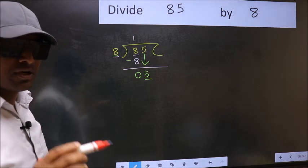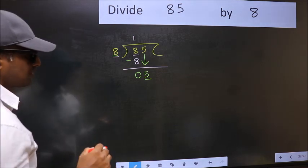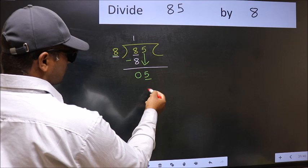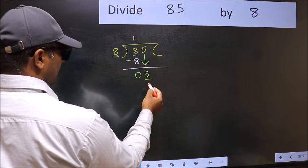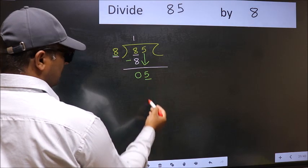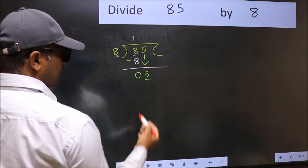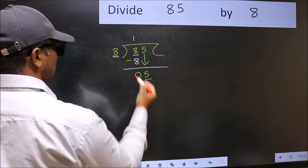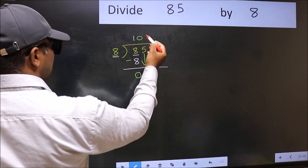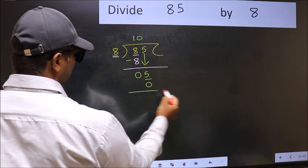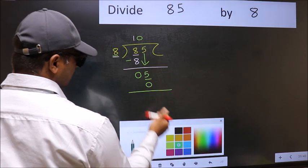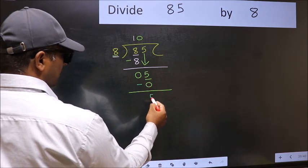Instead, what you should think of doing is, which number should we take here. If I take 1, we will get 8. But 8 is larger than 5. So, what we should do is, we should take 0. So, 8 into 0, 0. Now, you should subtract. 5 minus 0, 5.